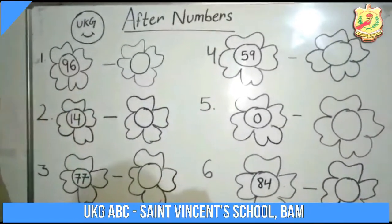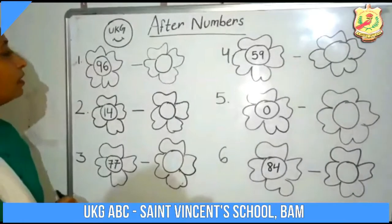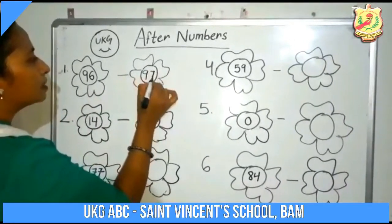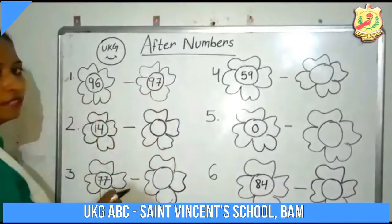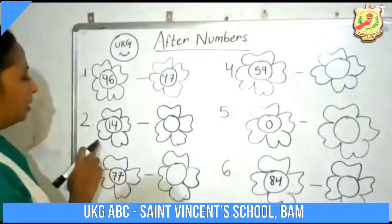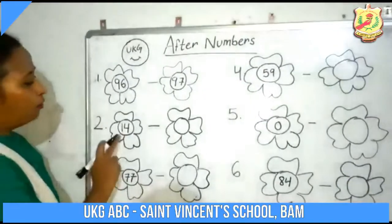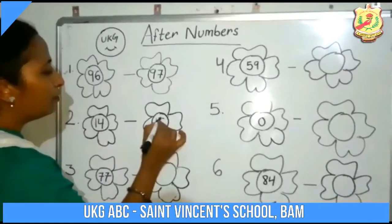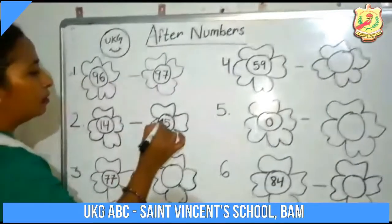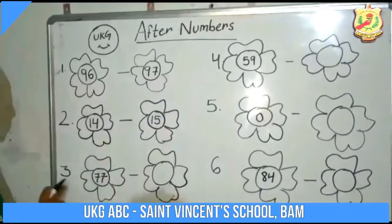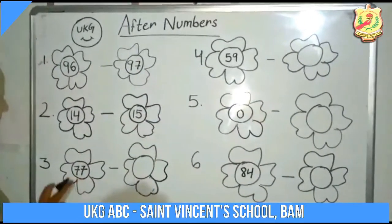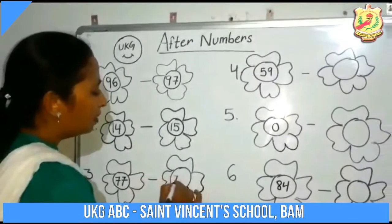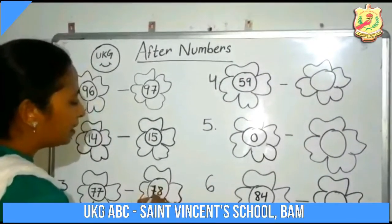What comes after 96? Let's recall the numbers. 96 after is 97. The next number: 14. What comes after 14? 14 after is 15.